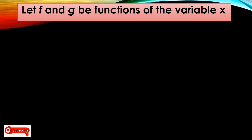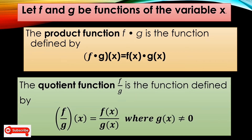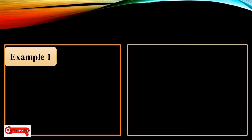Let f and g be functions of the variable x. The product function f times g is defined as fg(x) = f(x) times g(x). For division, the quotient function f over g is defined as (f/g)(x) = f(x) over g(x), where g(x) is not equal to 0, because if g(x) equals 0, it will be undefined. Let us have example number 1.